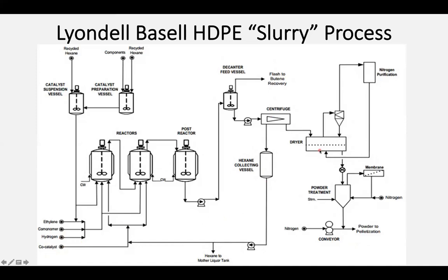I can then simply pull off the residue of my plastic slurry, dry off any remaining hexane, solidify it under nitrogen purification, powderize it, and then heat it back up to form reactive pellets.